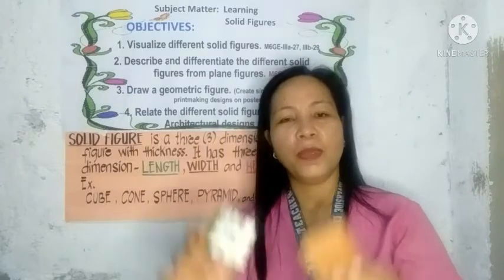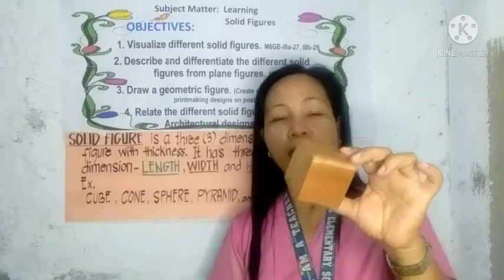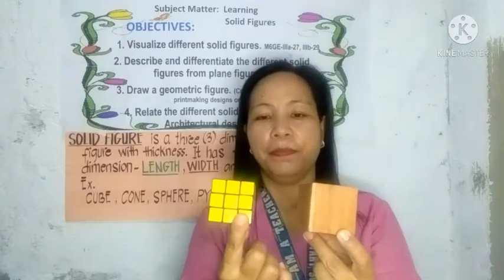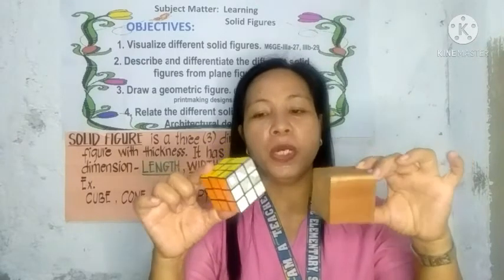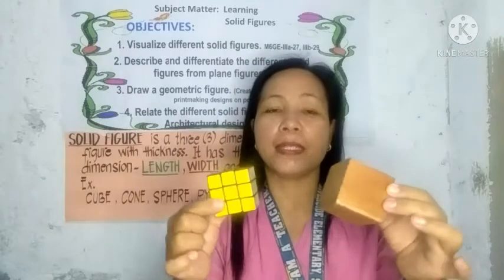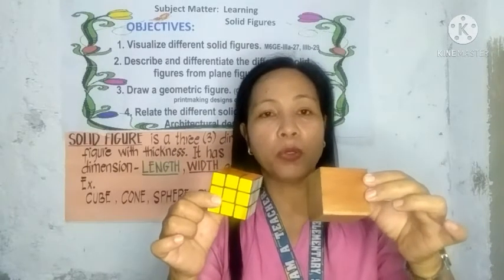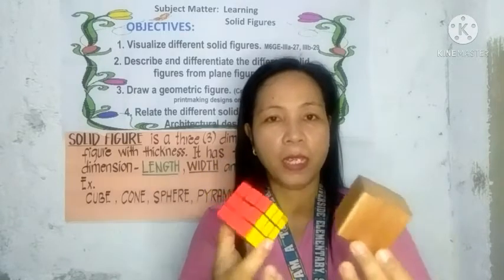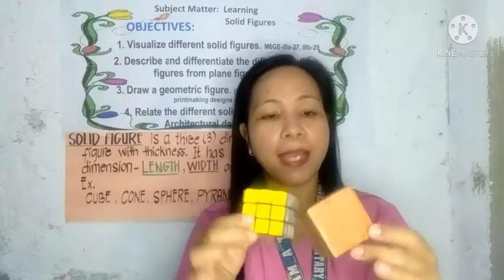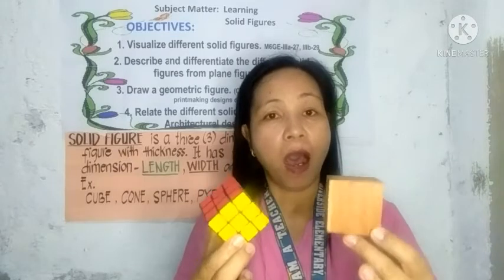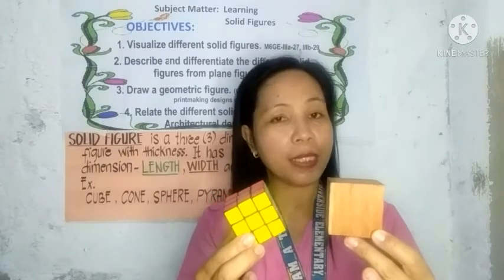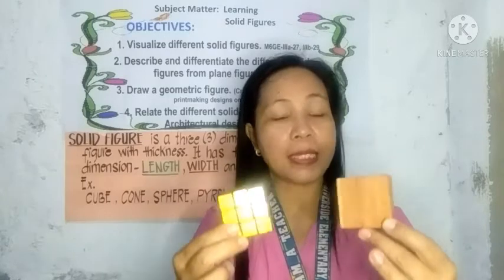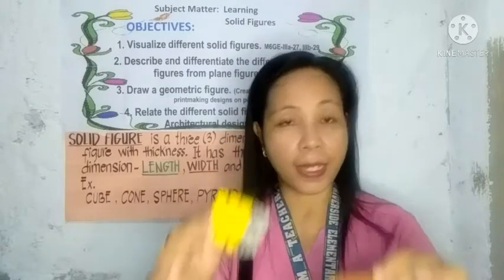Have you seen a cube? Here is an example — a Rubik's cube and a wooden cube. What do you notice? Both have six congruent sides or faces. All faces are congruent, which means they have the same shape, size, and measure.